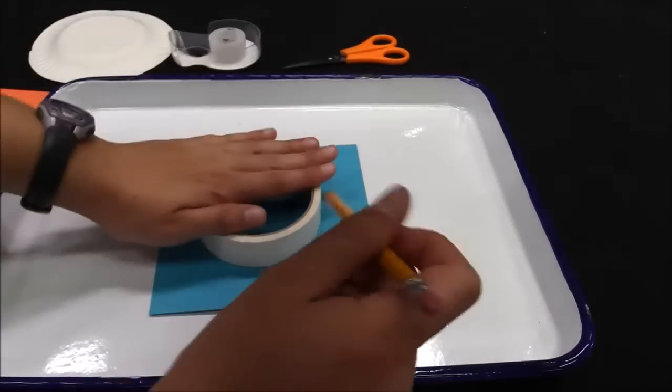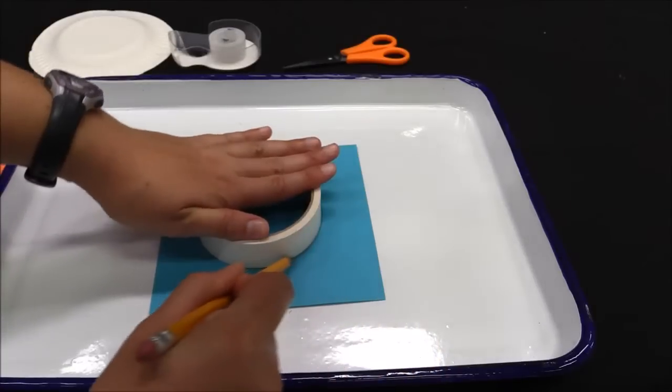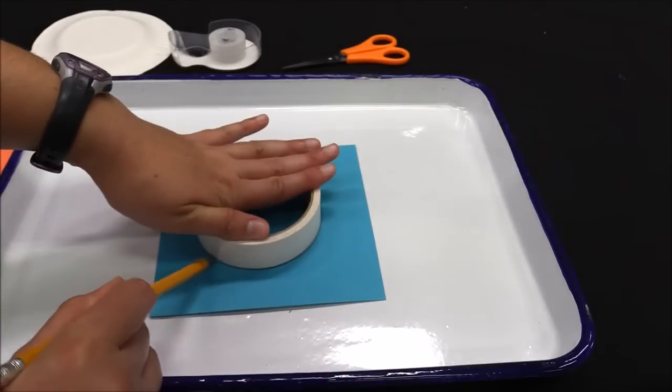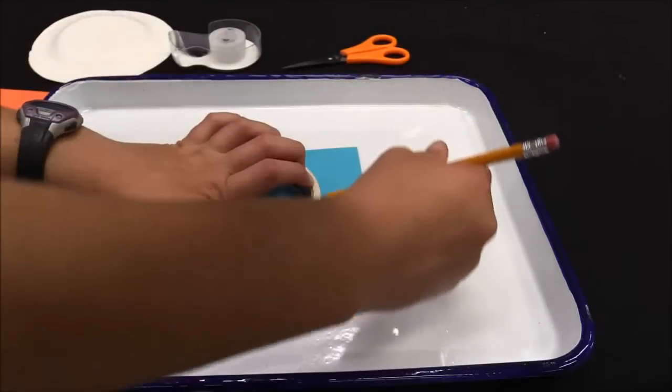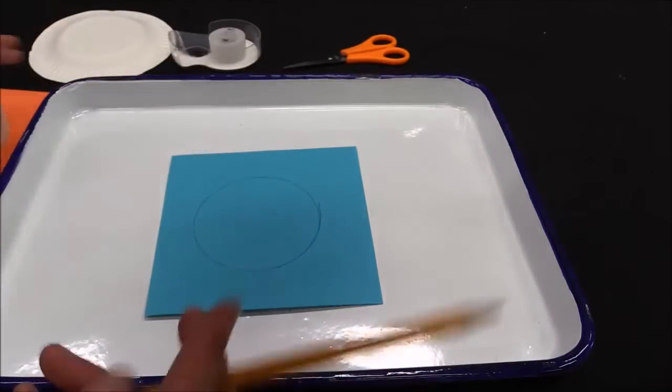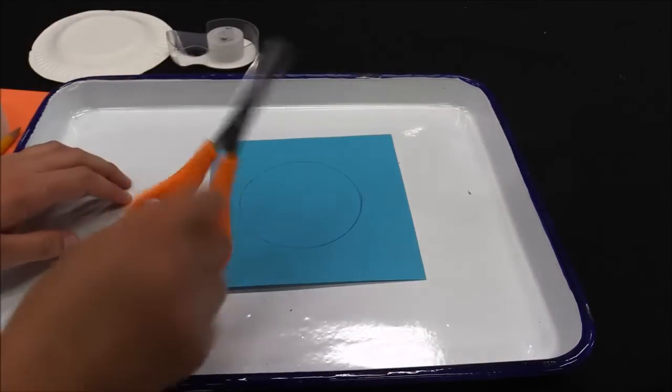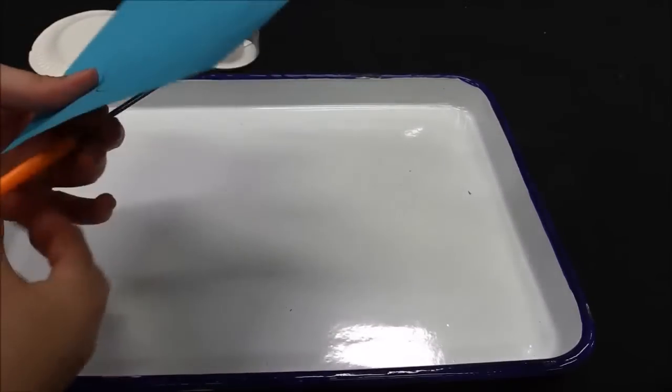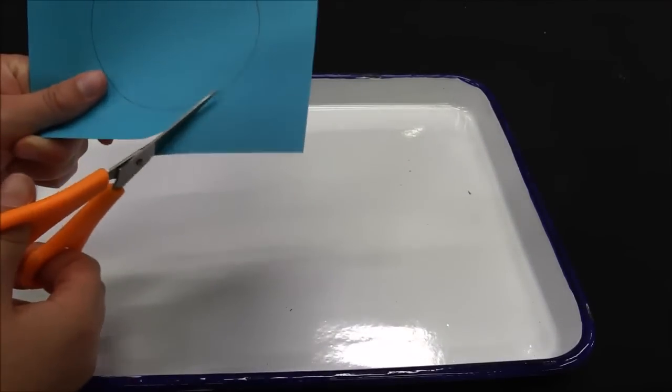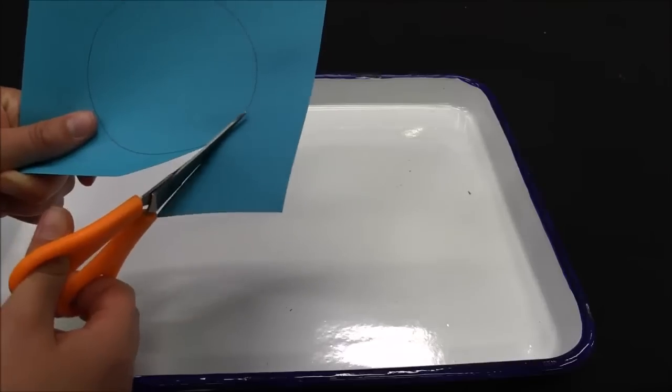First thing you're gonna do is trace your circle. There's our circle and now what you're gonna do is you're gonna take your scissors and you are gonna cut out your circle.